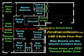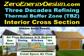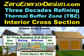Notice the location of the red dashed line. We are now going to show you an interior cross-section of the house where the red line is located to help you better understand the TBZ thermal buffer zone. Here we are showing three decades of refinements of zero-energy design, particularly focused on the thermal buffer zone. Relating this to the previous floor plan, you'll notice the sunroom on the left, the dining area, the kitchen, and the double-door airlock entry.